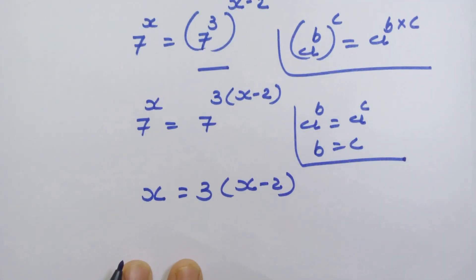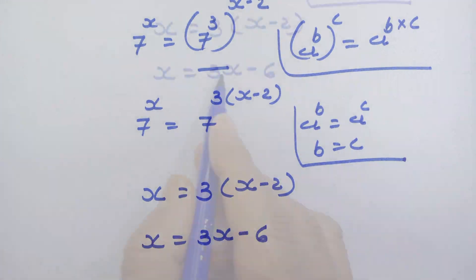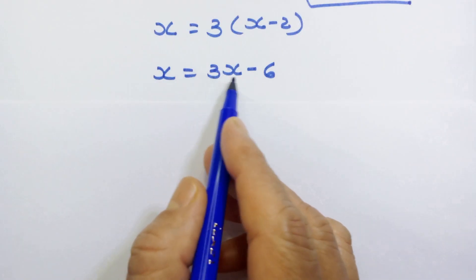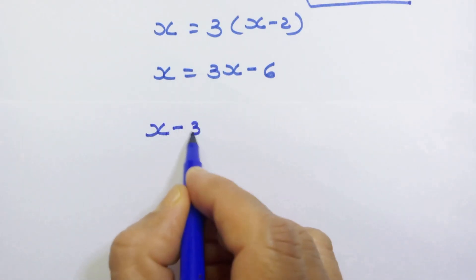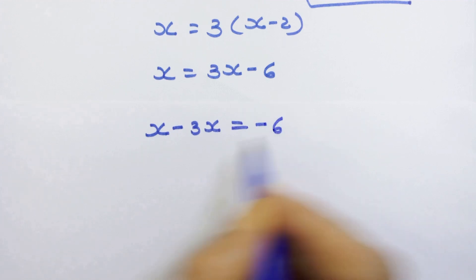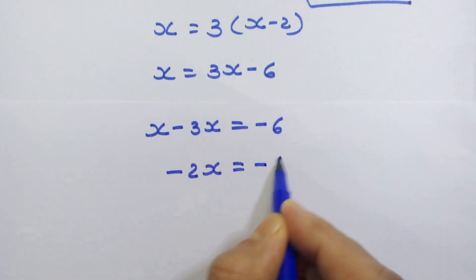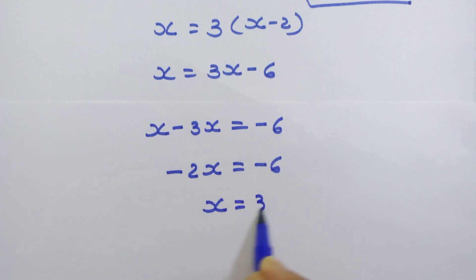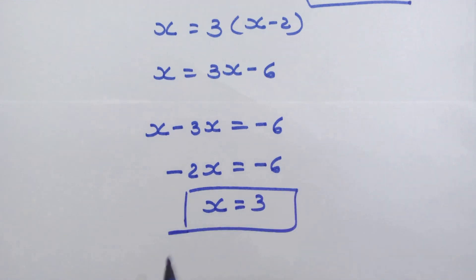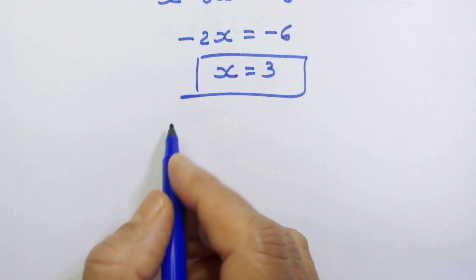Let's open this bracket: x is equal to 3x minus 6. Moving 3x to the left-hand side, x minus 3x is equal to minus 6, so minus 2x is equal to minus 6, therefore x is equal to 3.